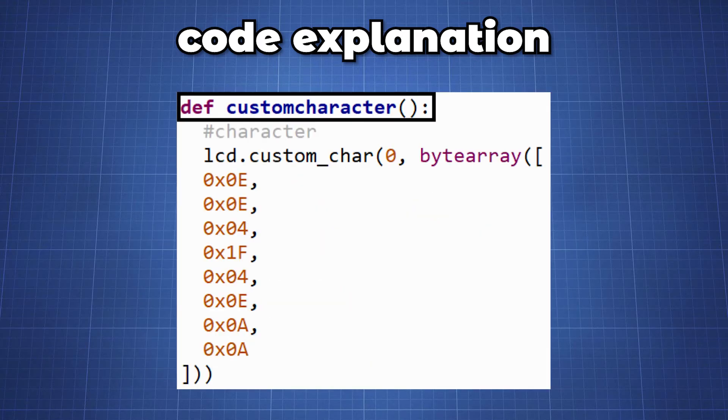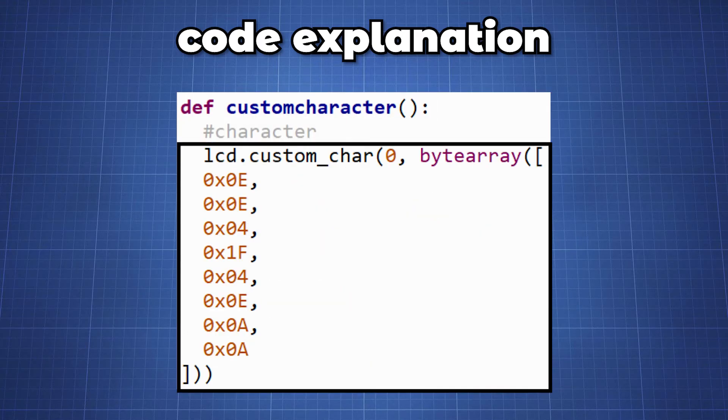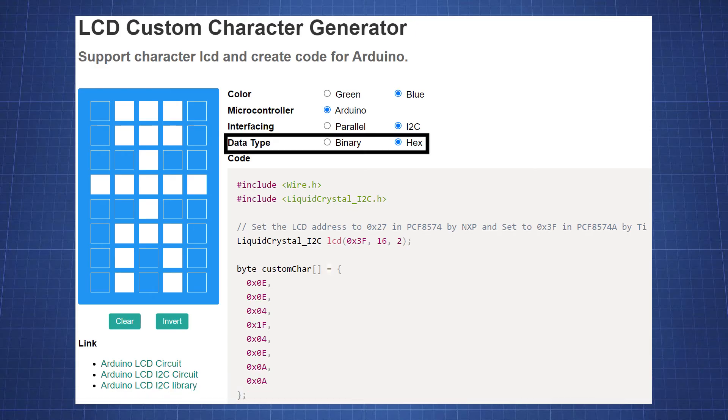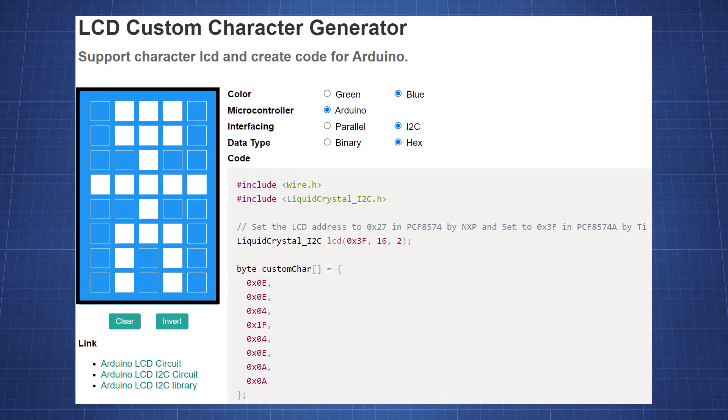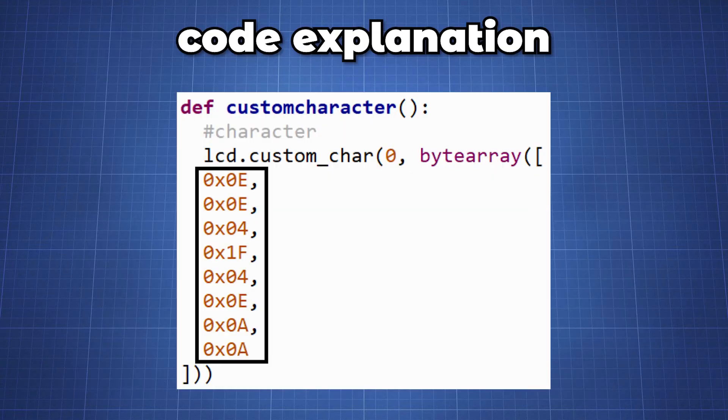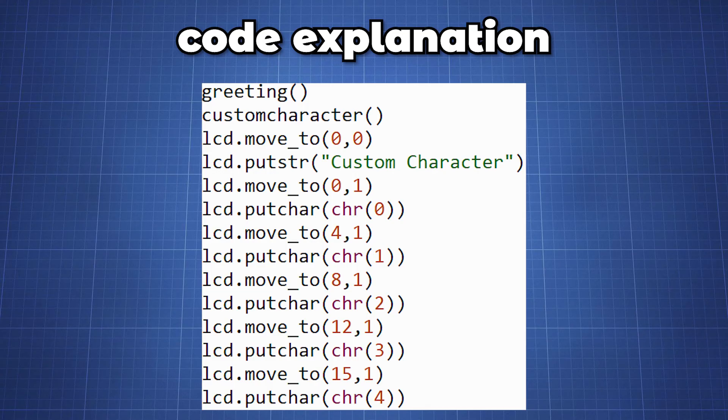In this function we will create custom characters. We will use the custom_char function and pass it a byte array with eight hex values. To do this is very simple. Go to the following website which will allow you to create LCD characters. Make sure that the data type is hex and then create your own custom character here by clicking on the blocks to draw. Copy the hex values once you create your character and paste them in the byte array. The first character created here will be at location 0. Now you can do this for multiple characters, incrementing the starting location.